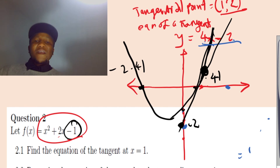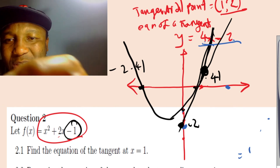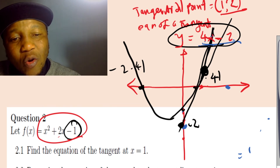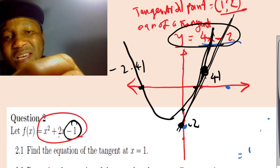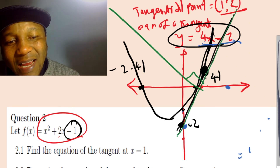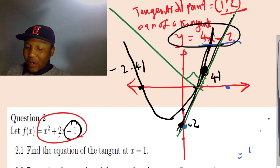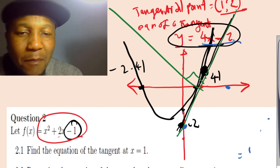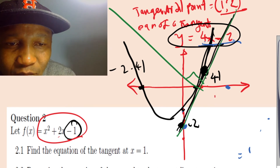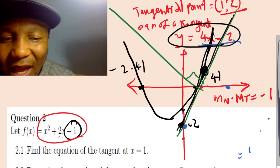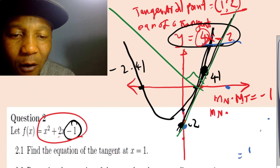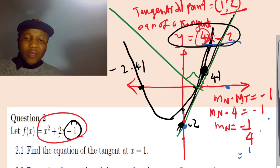Now for the equation of the normal. The normal is always perpendicular to the tangent — they make a 90° angle. So when you multiply their slopes: slope of normal × slope of tangent = -1. We have slope of tangent = 4, so slope of normal × 4 = -1, meaning slope of normal = -1/4.